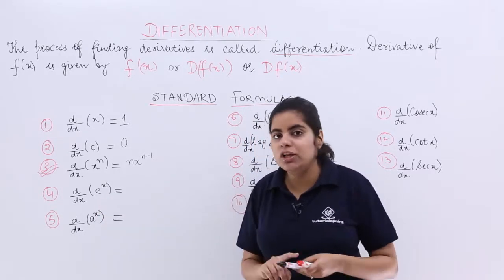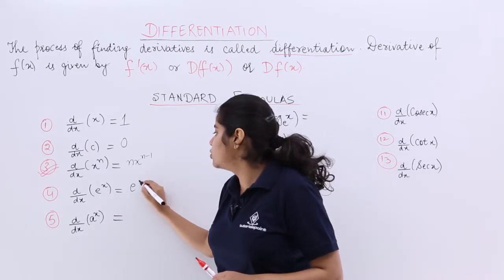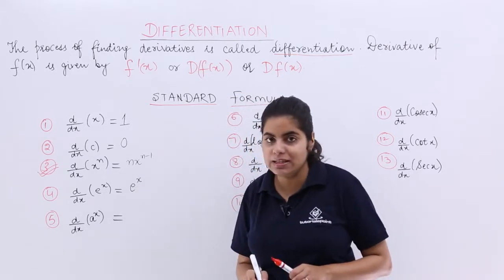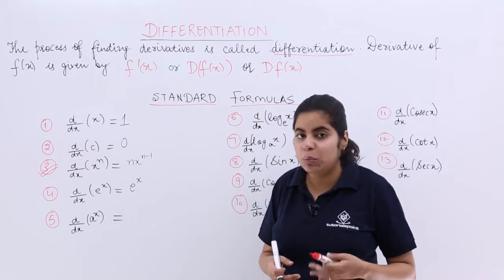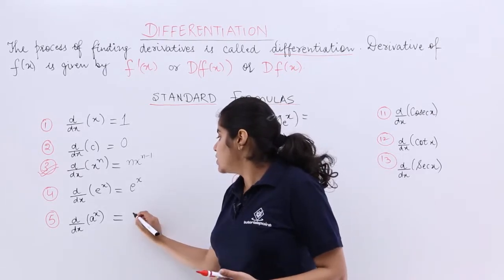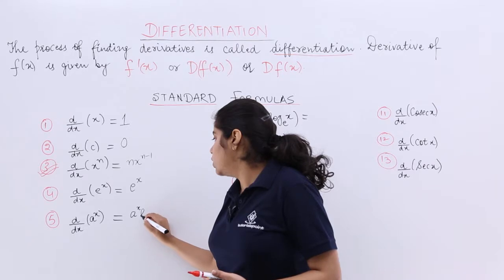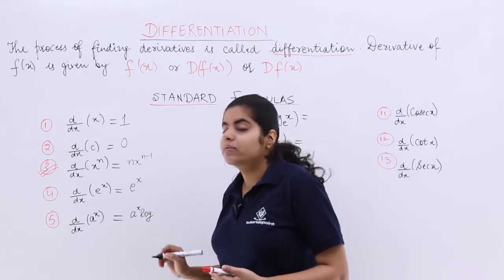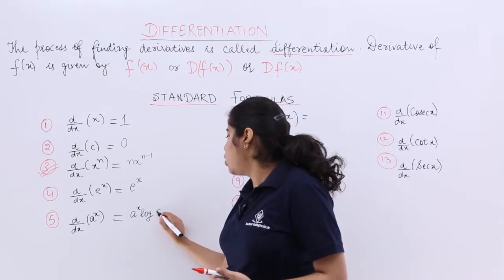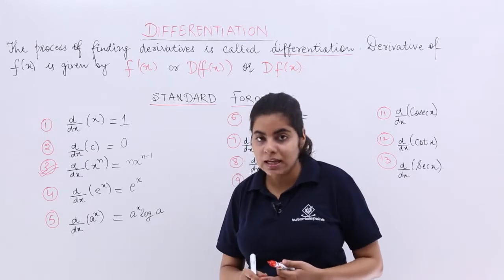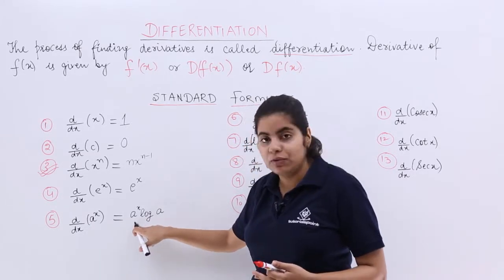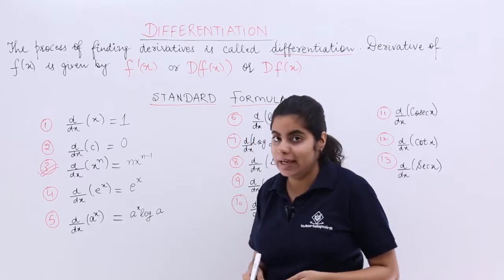e raised to the power x. Exponential differentiation is exponential only. No change. That is the answer. Next is a raised to the power x. It is a form of again exponential. So it is a raised to the power x log a. That is the answer. A raised to the power x will remain as it is and it is log a.